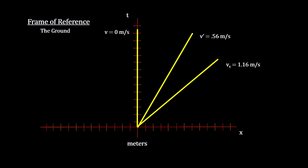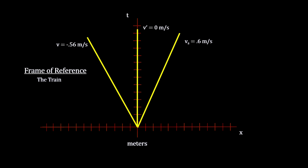If we put this on our space-time graph, we see the train moving as the inertial frame velocity v-prime, and the person walking at 1.1 meters per second. Now just rotate the velocity lines to make the train standing still — this turns it into the space-time graph for the train's frame of reference. Here we see the ground moving backwards at 0.56 meters per second, and the person on the train moving at 0.6 meters per second.